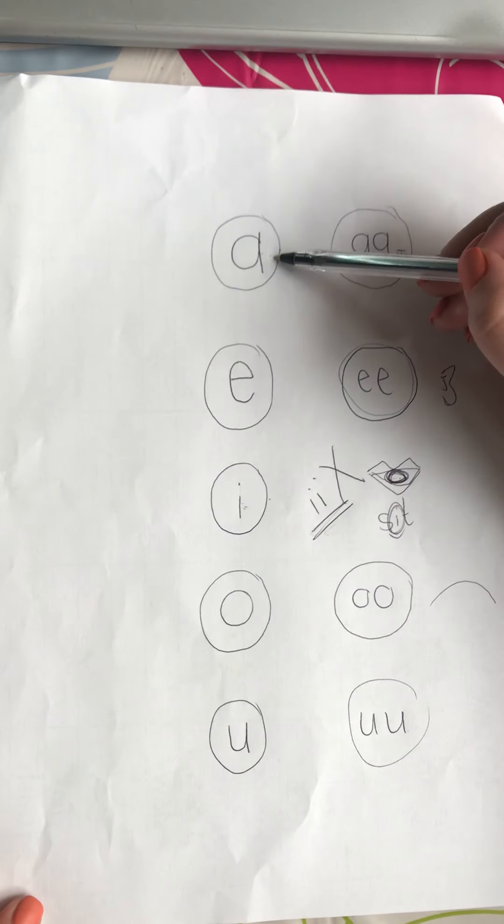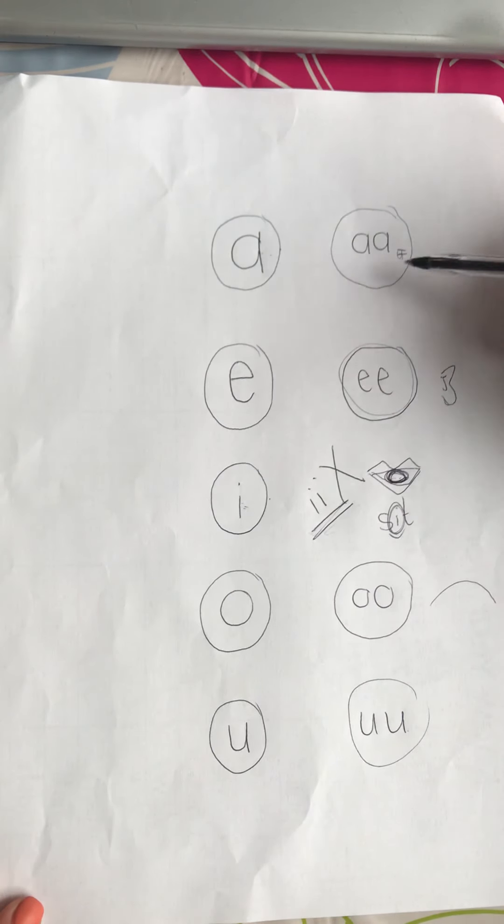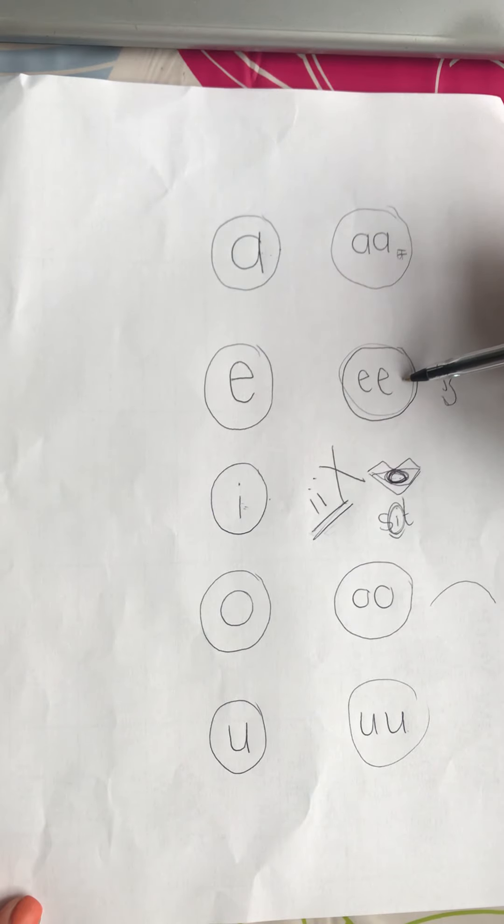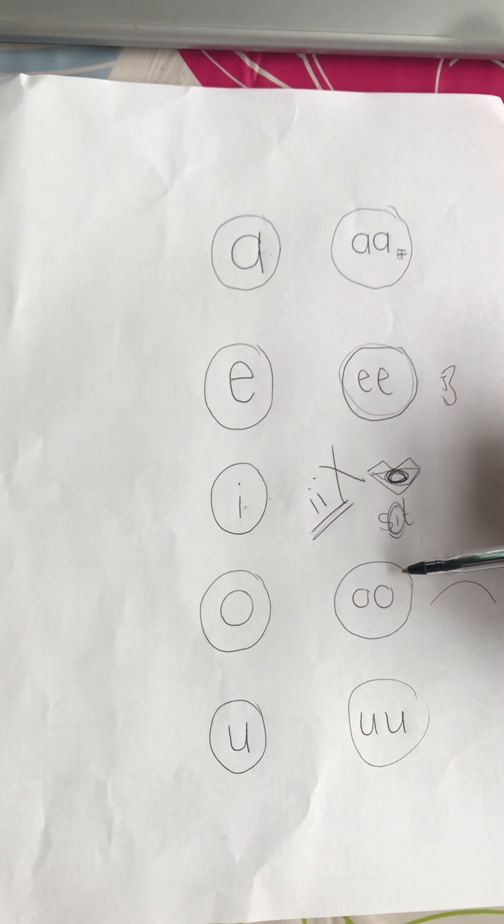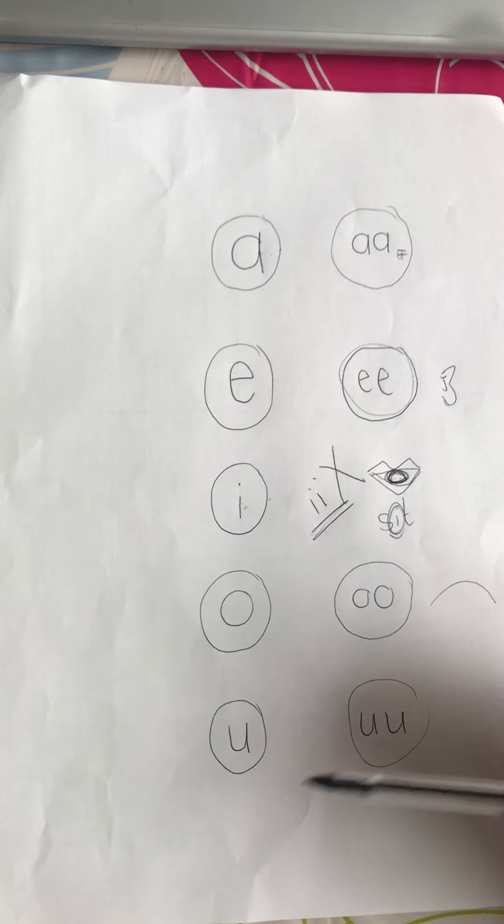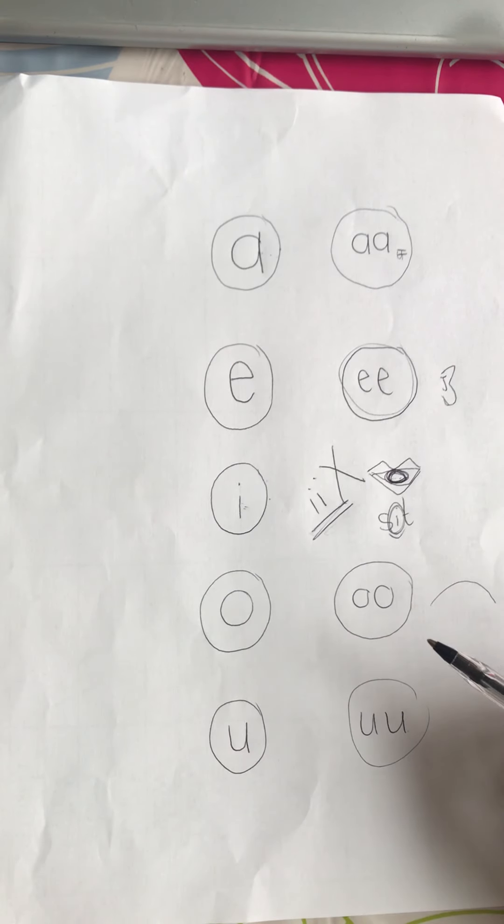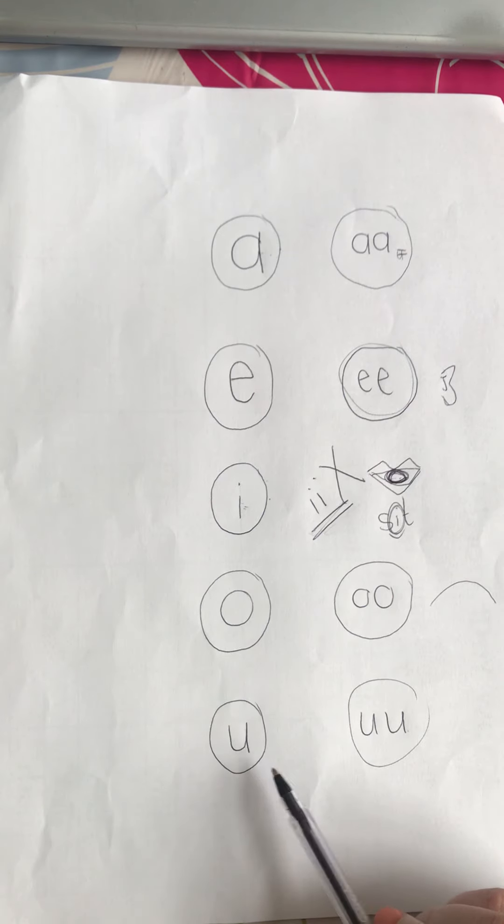So, A, A, E, E, E, E, E. This one is in the mouth. A, O, U, U, U. Do you hear that my voice gets lower there? That's because this comes from the back of the throat. U, U. Okay.